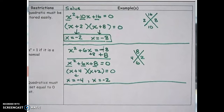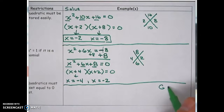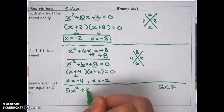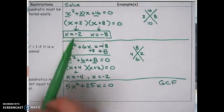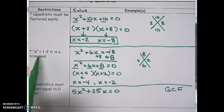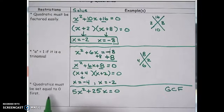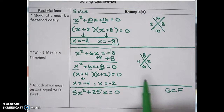There are also problems that use GCF factoring. GCF problems look a little different — they don't look like trinomials. For example, if we had 5x² + 25x = 0, you'll notice there are only two parts; it's a binomial, not a trinomial. a is 5, so the a = 1 restriction doesn't apply here. The quadratic is already equal to 0, and it should be factored — just differently than a trinomial.